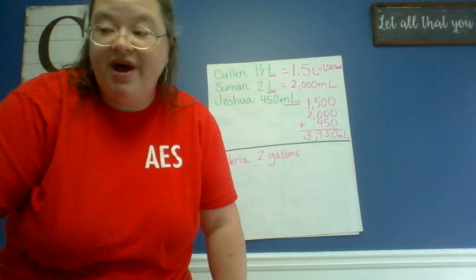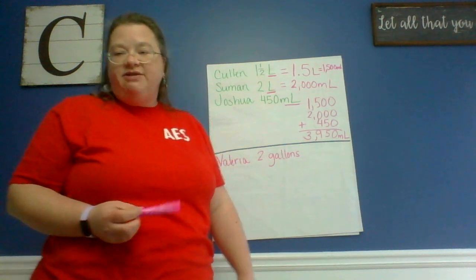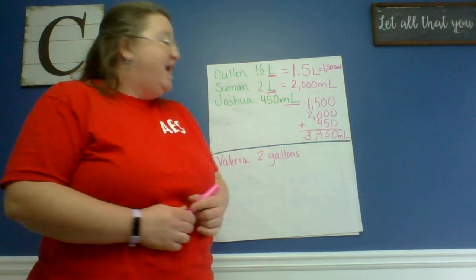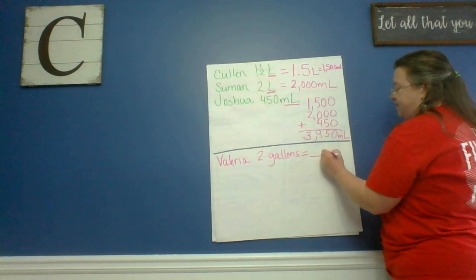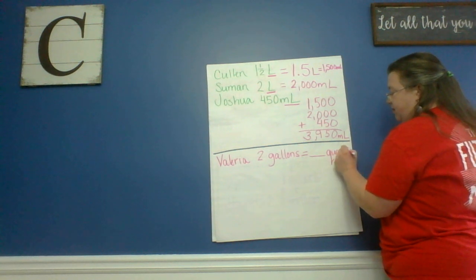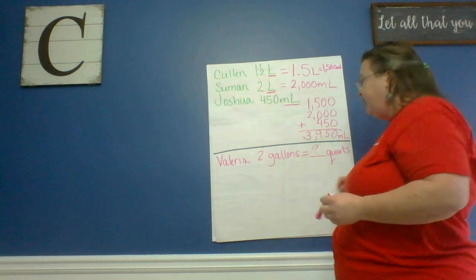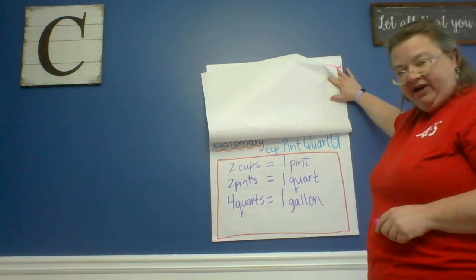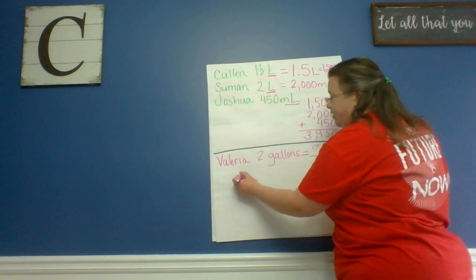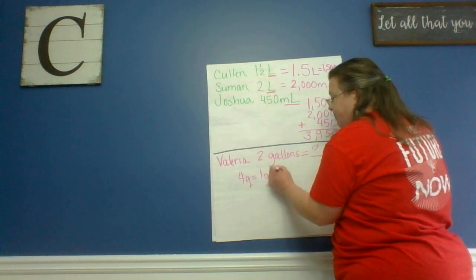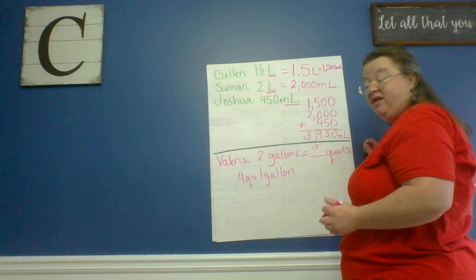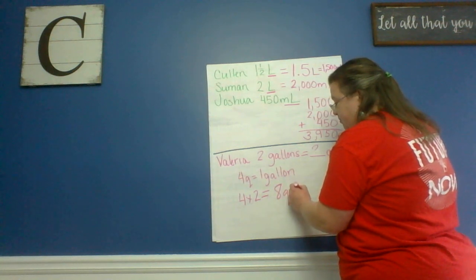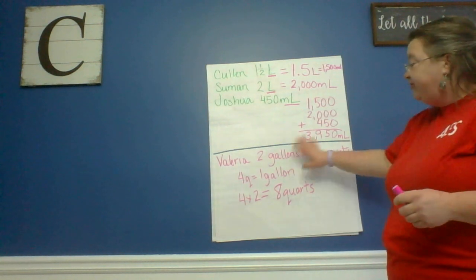Now let's look at one more problem. Malaria has two gallons of punch and wants to share it equally with four friends — she's giving it all away. I need to find how many quarts each friend gets. Looking back at the chart, four quarts equals one gallon. But she has two gallons, so I multiply: four quarts times two equals eight quarts total.